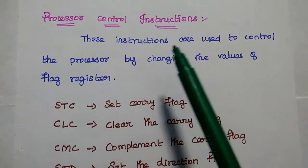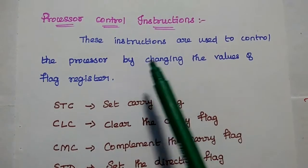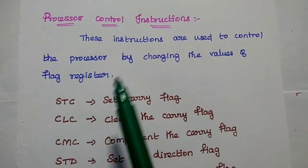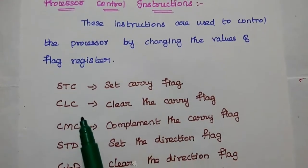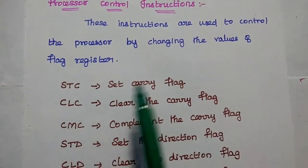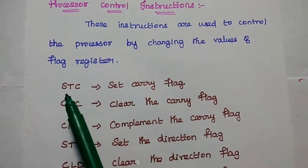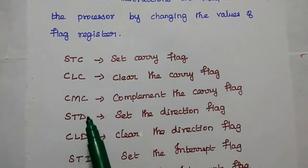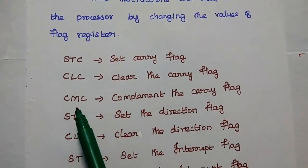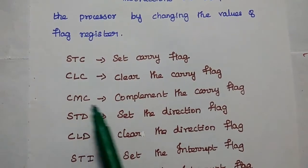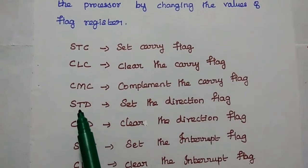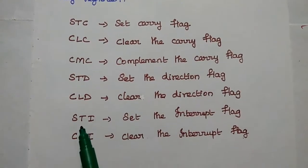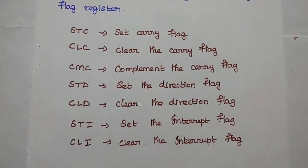Next are Processor Control Instructions. These instructions are used to control the processor by changing the values of the flag register. STC — Set Carry Flag. CLC — Clear the Carry Flag. CMC — Complement the Carry Flag. Similarly, we can have Set Direction Flag, Clear Direction Flag, Set Interrupt Flag, and Clear Interrupt Flag.